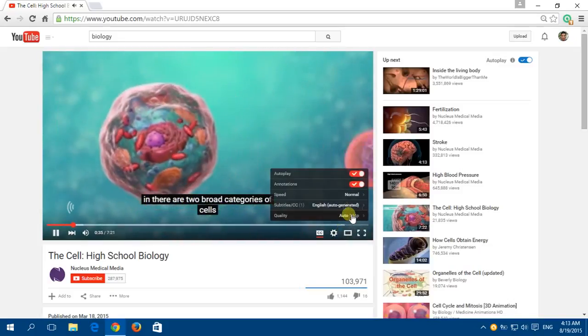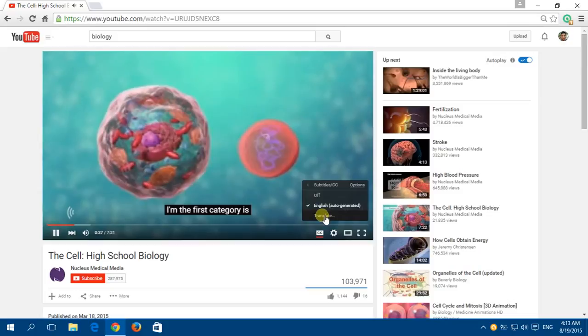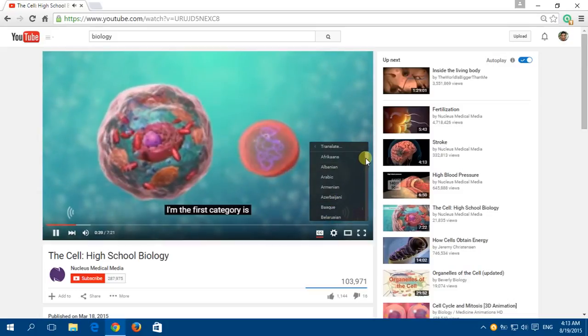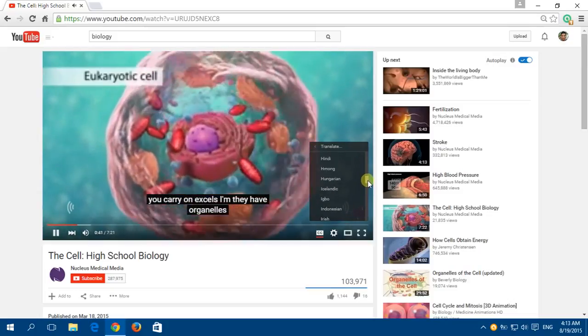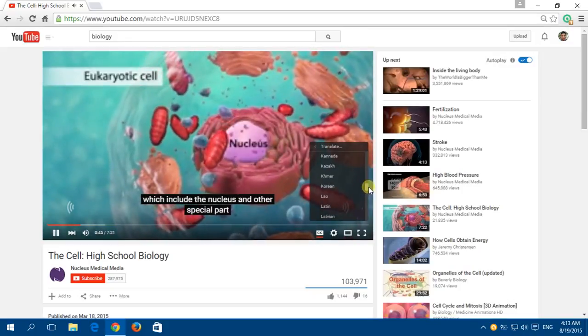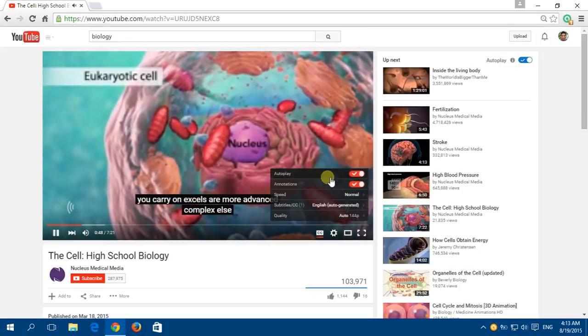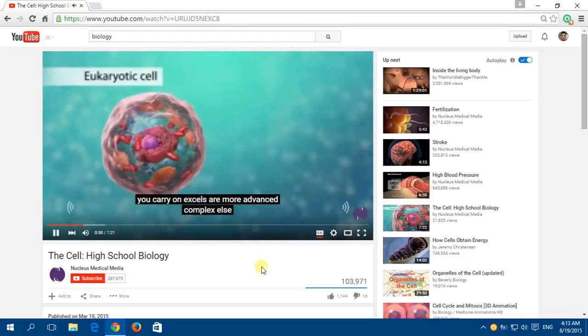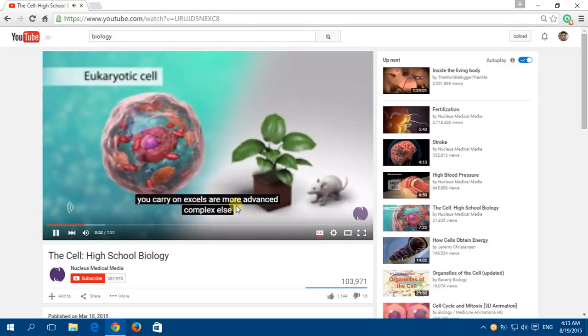There are two broad categories of cells. The first category is eukaryotic cells. They have organelles, which include the nucleus and other special parts. Eukaryotic cells are more advanced, complex cells, such as those found in plants and animals.